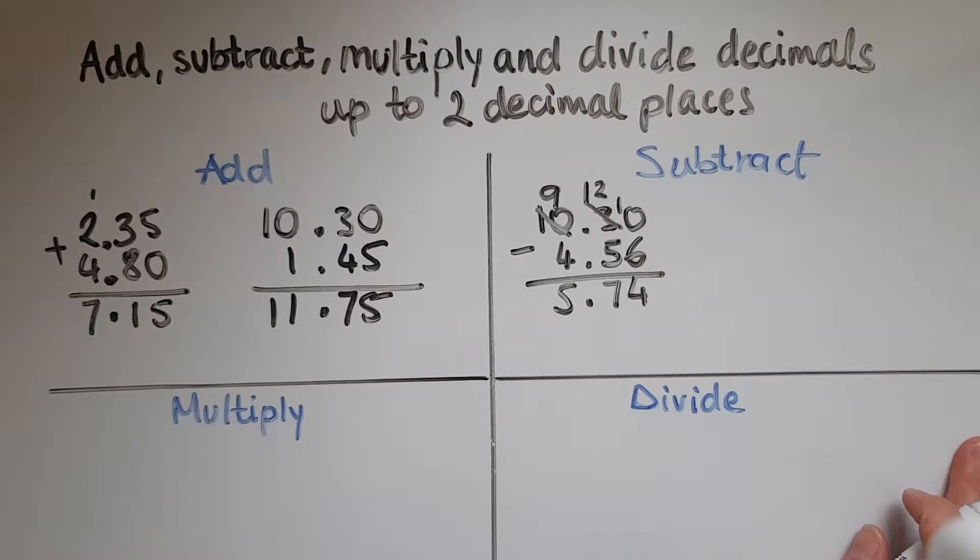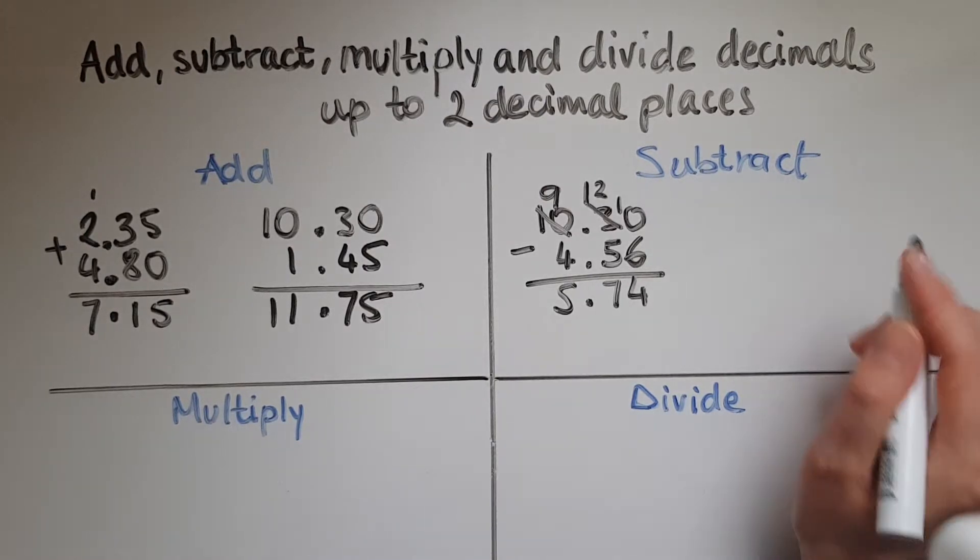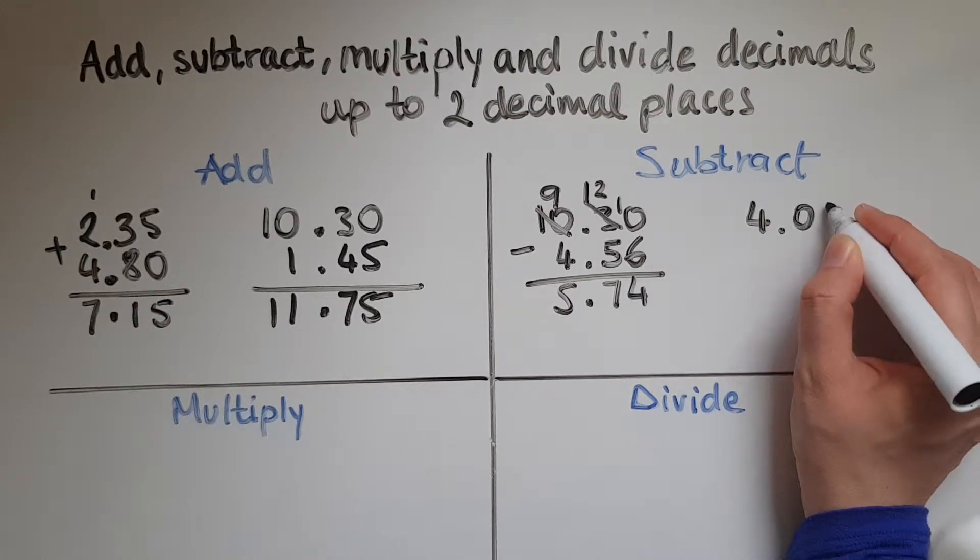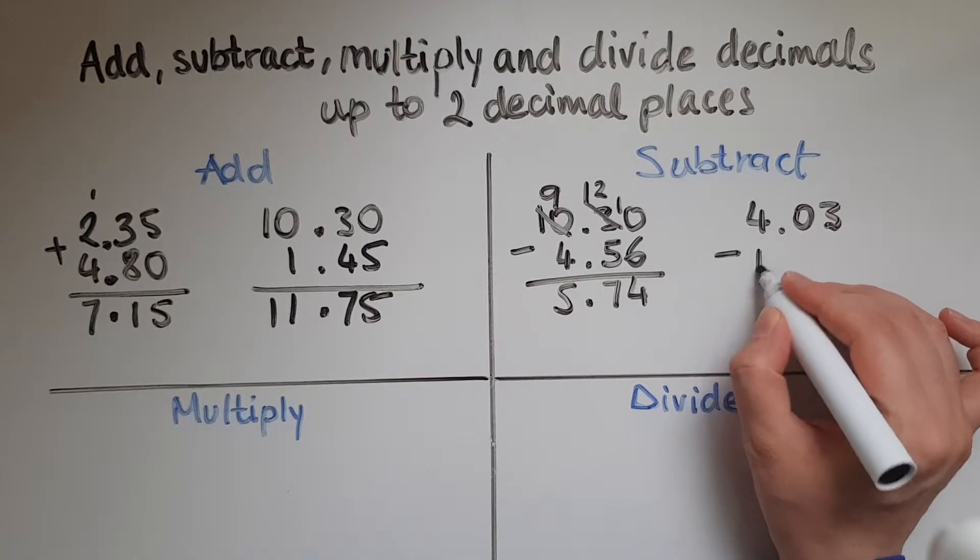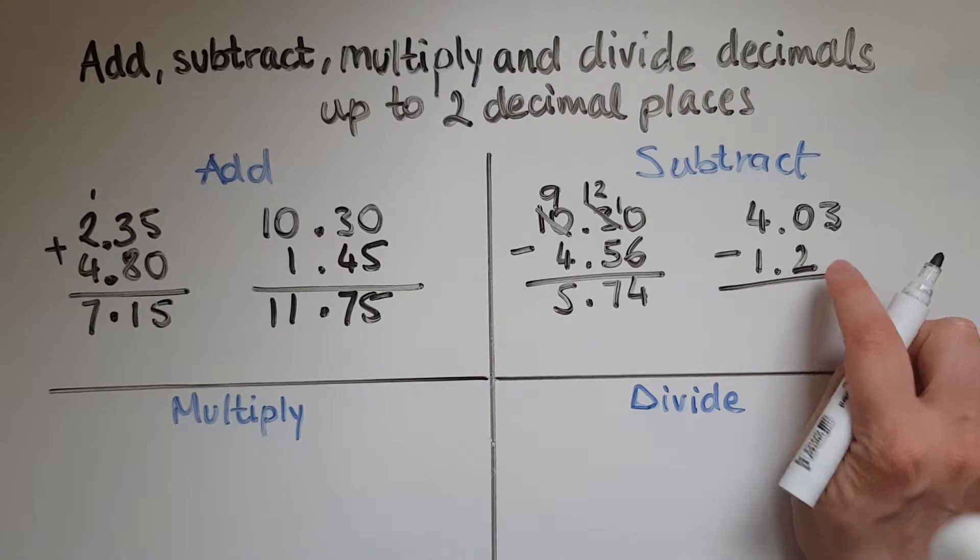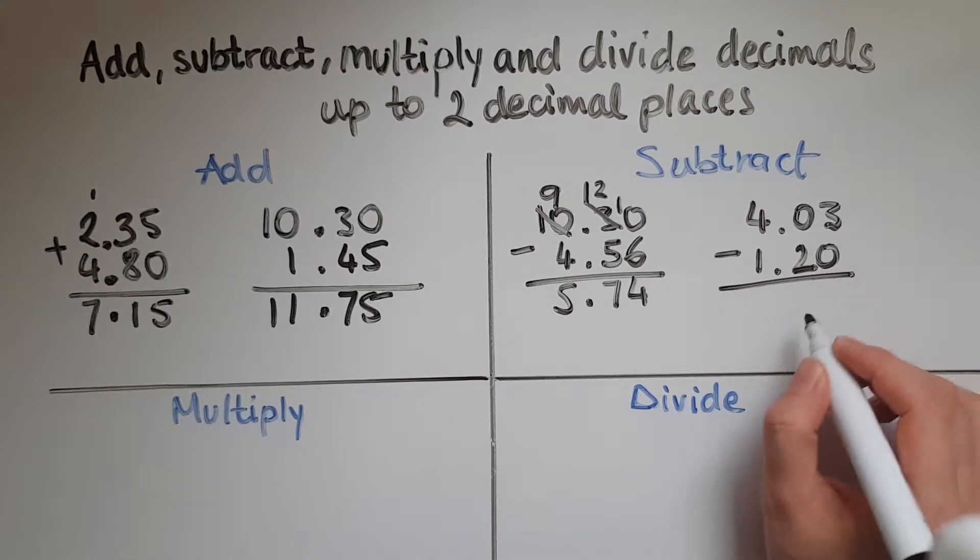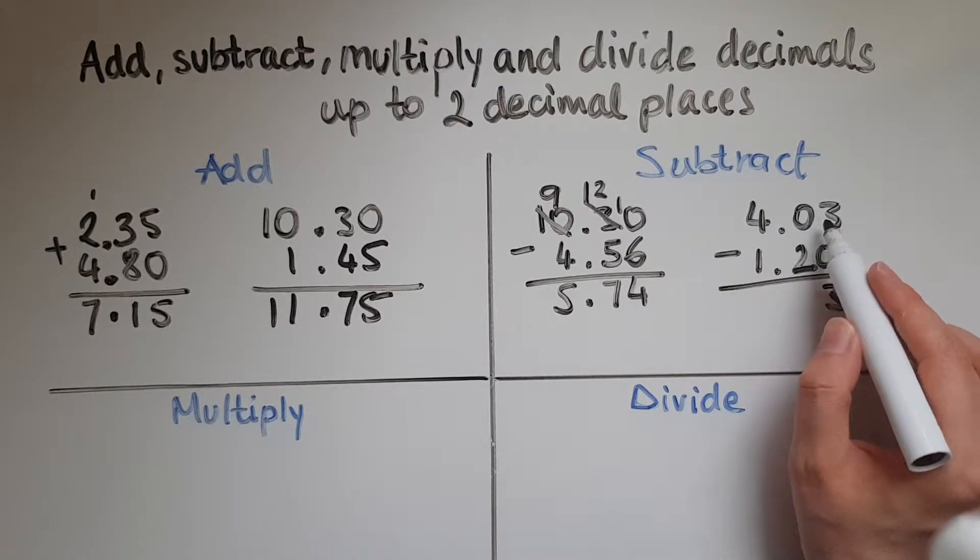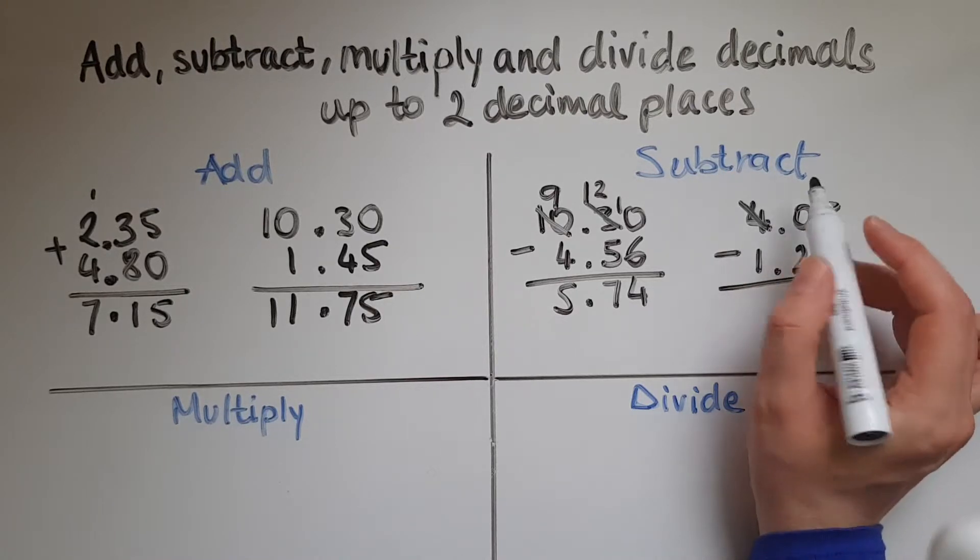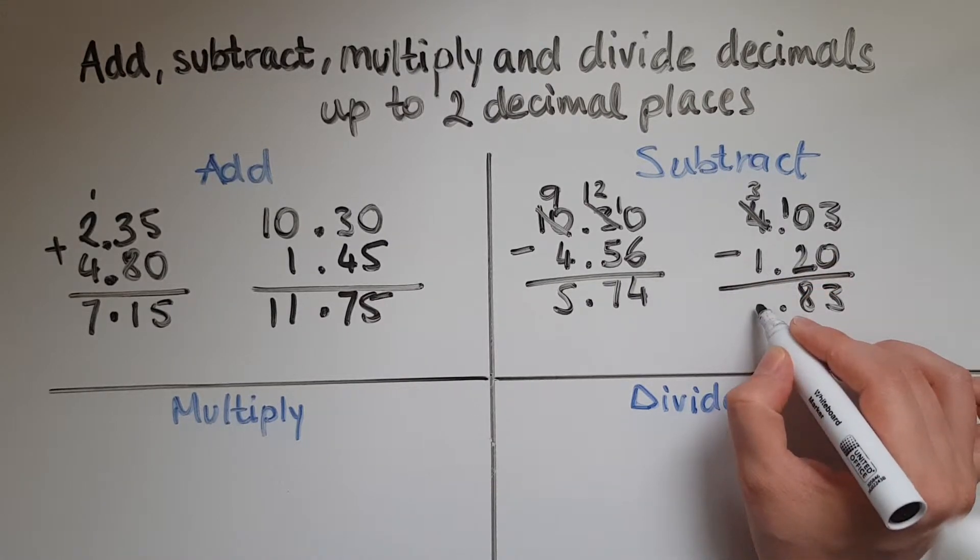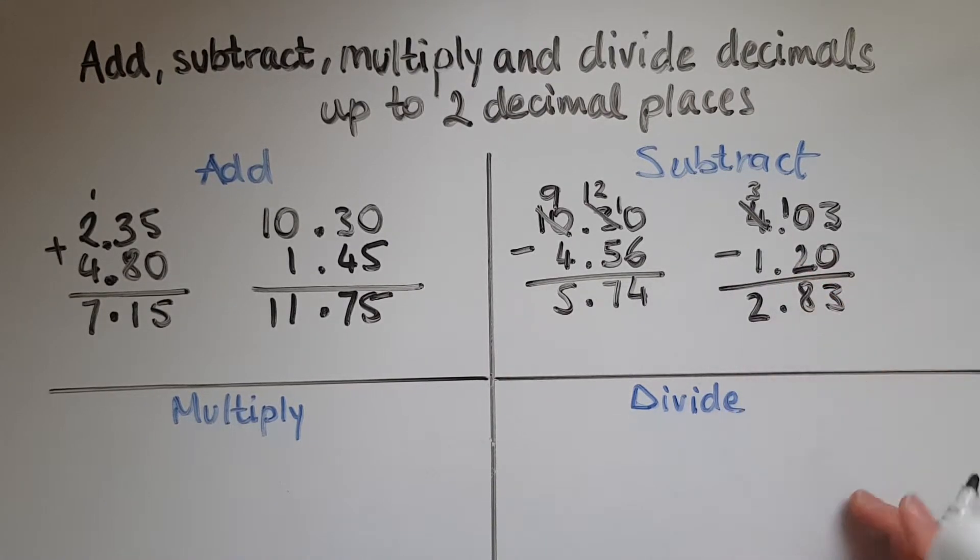And let's try another one. So if we have 4.03 take away 1.22. So again there is no digit here so I can fill it with a 0. 3 take away 0 is 3. 0 take away 2 would give a negative number, so I'll borrow 1 from the 4. So the 4 becomes 3, this becomes 10. 10 take away 2 is 8. 3 take away 1 is 2. So 2.83.